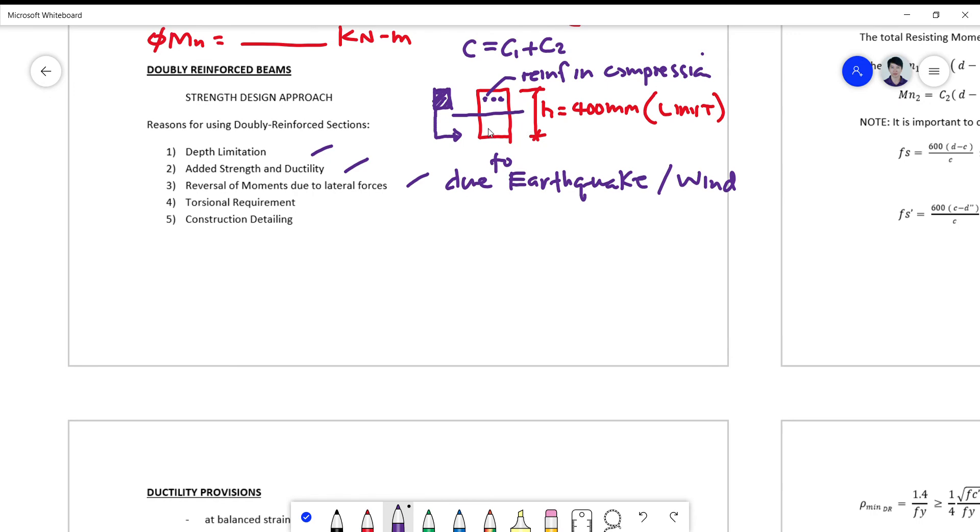on both sides, double reinforcement on both sides, to anticipate such reversal of moments. Another thing is for torsional requirement. We want to add up to the torsional capacity,